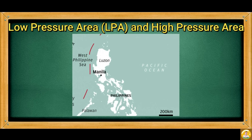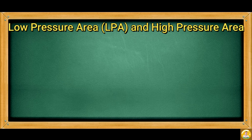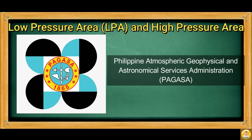These areas are in the Pacific Ocean and in the West Philippine Sea. The Philippine Atmospheric, Geophysical and Astronomical Services Administration, or PAGASA, keeps track of cyclones that enter the PAR.